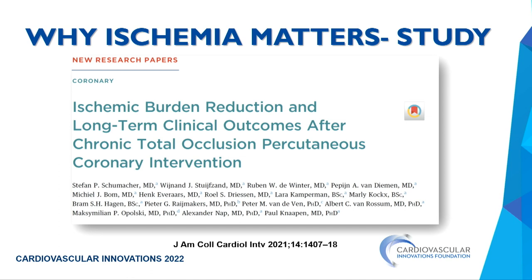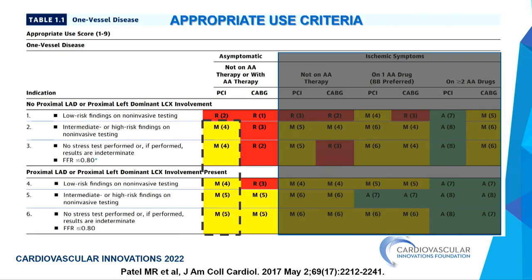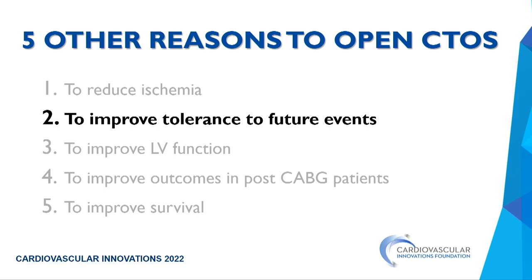Looking at appropriate use criteria, it is rarely inappropriate to do single-vessel PCI especially if the patient has intermediate-to-high risk and low FFR. The guidelines are fundamentally concerning to me because as doctors we have to use the best data. Regarding tolerance for future events: if you have three coronaries and one is dependent on another, blocking one is going to be a problem. Patients with CTO who present with AMI have a much higher mortality — replicated in many studies.